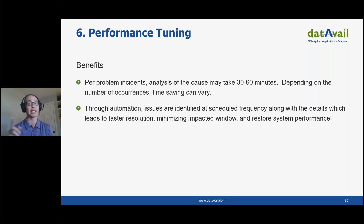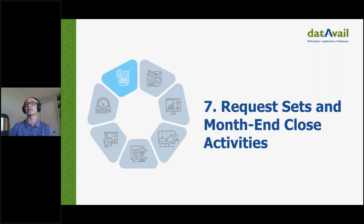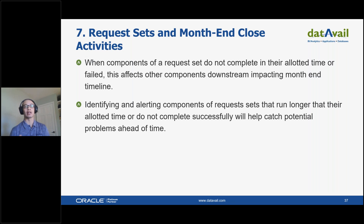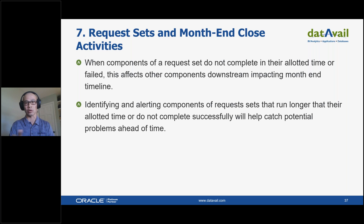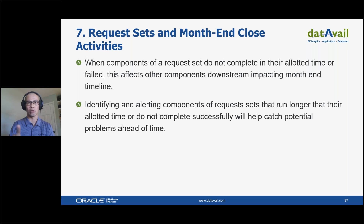Benefits: saves time, can help restore system performance, and prevents performance impact. Number seven: request sets and month-end close activities. The month-end close process is extremely complex and requires involvement from various departments and owners of respective modules. The month-end close process is comprised of many request sets that can be extensive, with children, grandchildren, and great-grandchildren requests. Traversing these hierarchies for issues can be confusing and time-consuming — and we can automate that process.